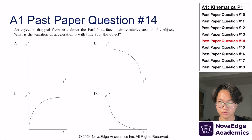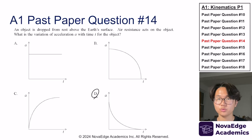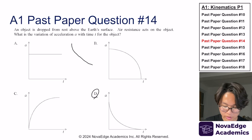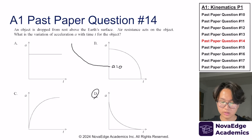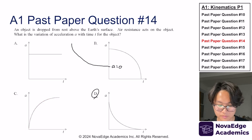Now let's try this past paper from topic A1. If you chose D, then you are absolutely correct. A lot of students answer B, but air resistance gradually decreases the acceleration of the body until acceleration equals zero — that's terminal velocity. The graph showing that is D. It's not A or C because C shows increasing acceleration, which is not true.